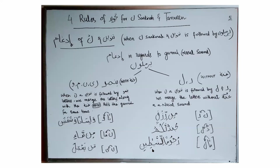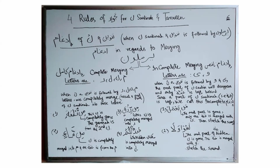In the next example, Tanween is followed by letter Lam, and we recite it without any sound of Gunna. In short, when Noon Sakina or Tanween are followed by Yanmu letters, we do Idgham Bi Gunna and hold the nasal sound. But if Noon Sakina or Tanween is followed by letter Ra or letter Lam, we merge Noon Sakina into the following letter without Gunna or nasal sound.